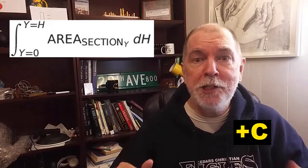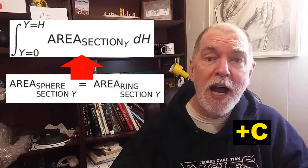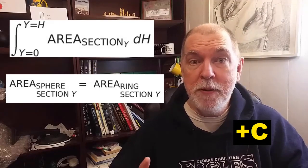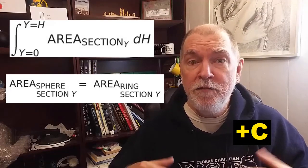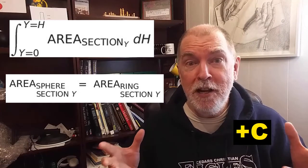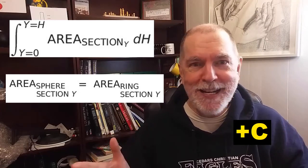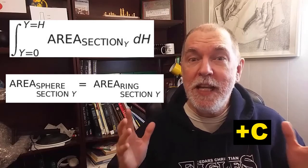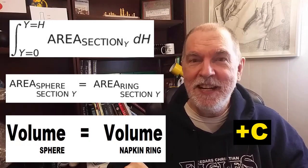The cross sectional area at position y doesn't distinguish between the sphere and the ring. For any position y, they're identical. That means each volume is identical.